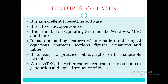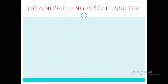Let us quickly see how a basic program can be done in LaTeX. First, download and install MiKTeX. MiKTeX is a distributor. There are two types of softwares we need to have: one is the distributor and the second one is the editor. The distributor stores all the LaTeX content, latest updates, and implementations. The editor is where we can edit everything based on those packages.